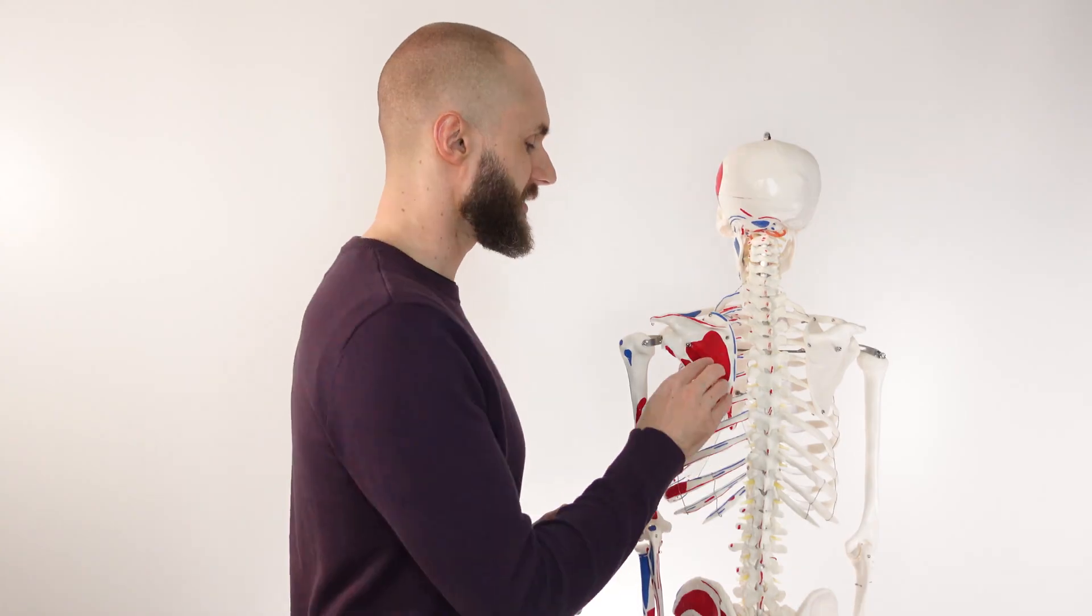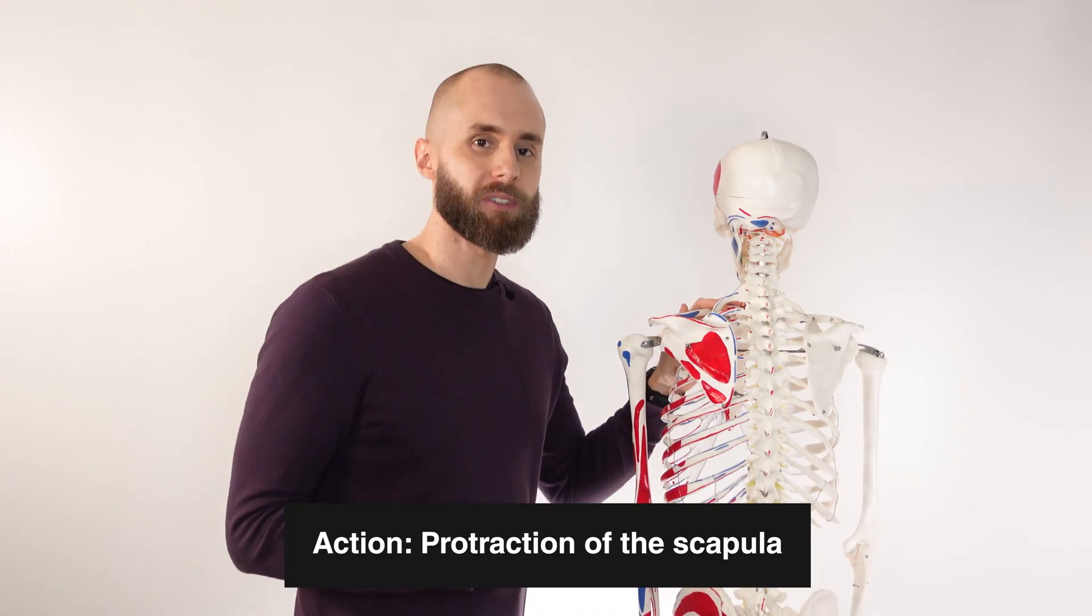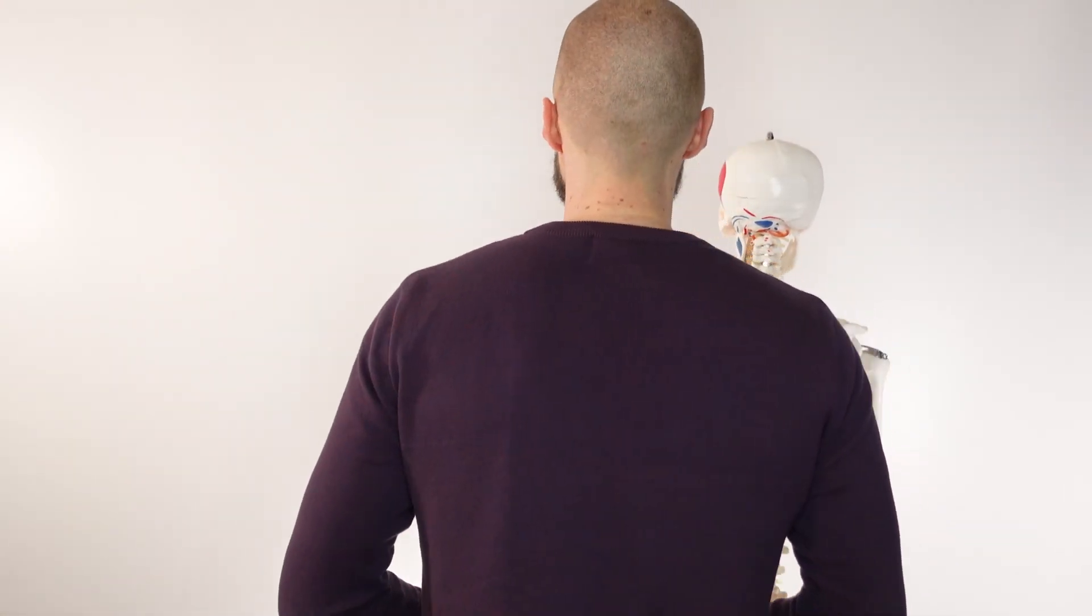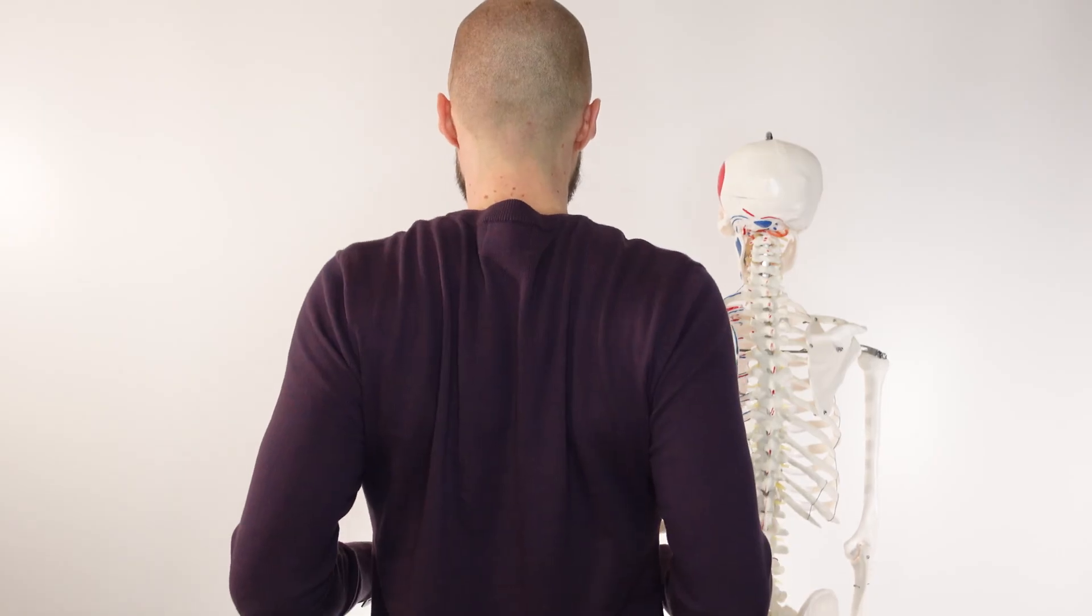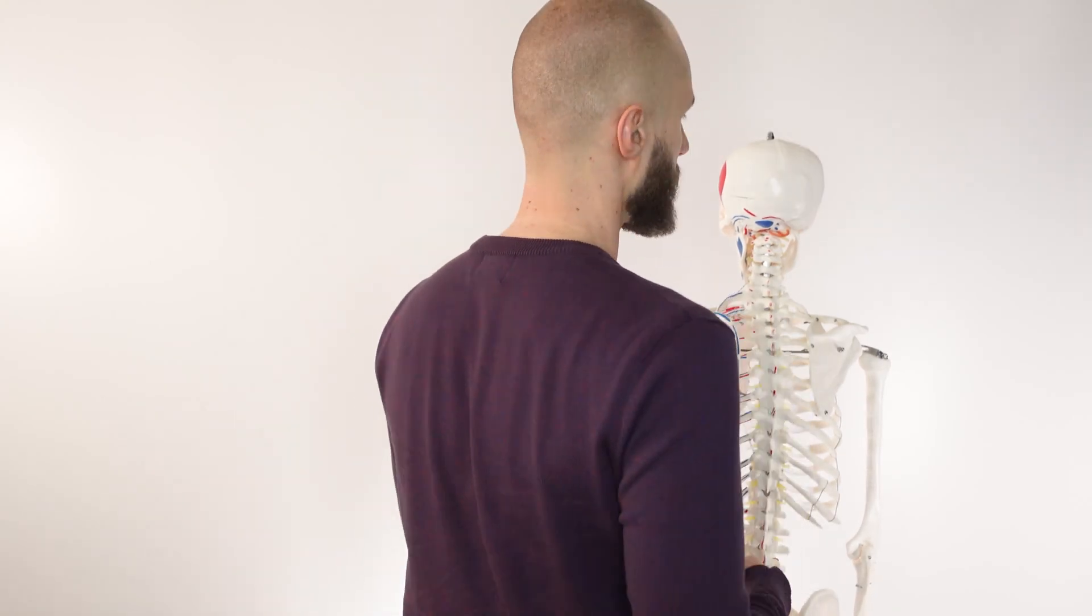So let's take a look at the actions next. Our first action is going to be protraction of the scapula. That's when the scapula comes forward, gliding across the surface of the ribs here towards the anterior of the body. I'll show you an example on myself. So my scapula is retracted right now and the serratus anterior can contribute to pulling it forward into that protracted position.